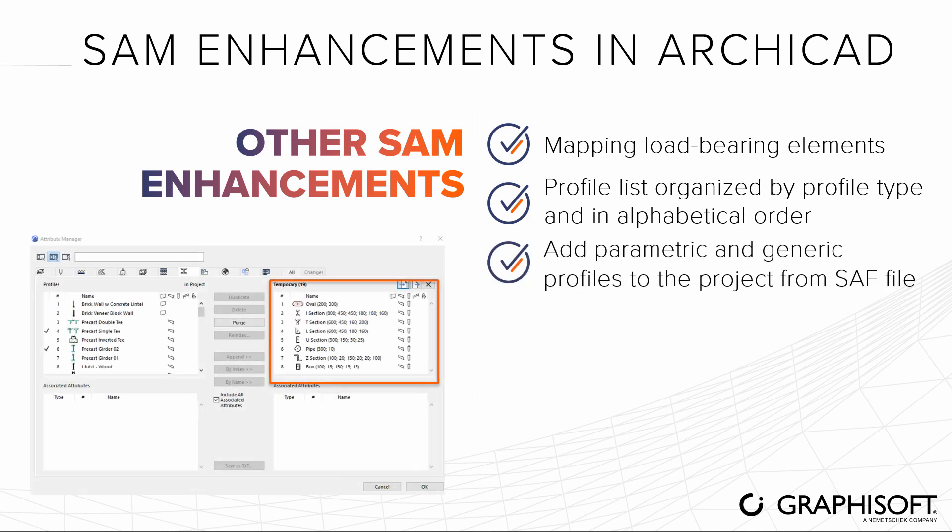ARCHICAD recognizes eight parametric and generic cross-section shapes from SAF files. Use the Attribute Manager to add them directly to your ARCHICAD project as Complex Profiles. Visit graphisoft.com to learn more about ARCHICAD or to download your free trial version today.